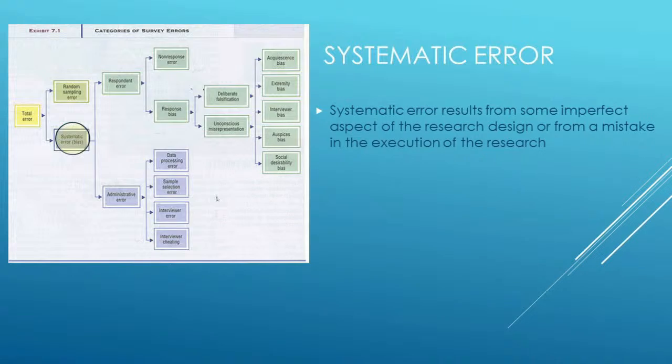The first issue we'll look at is the potential for systematic error within a survey. Systematic error is an error caused because of the system that we're using — it is within our control, as opposed to random sampling error, which is a statistical variation. Our major focus will be on the things we can do in our system to ensure it works well. When we look at systematic error, it tends to fall into two major categories: either the respondent causes some problems, or the survey administrator did something wrong. Let's take a look at each of those in turn.